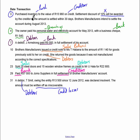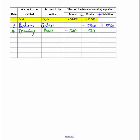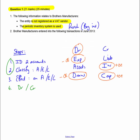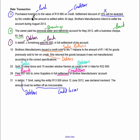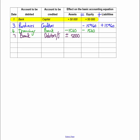Transaction on the 7th: debtor Jay Armstrong paid R5,000 in full settlement of his account. The two accounts are debtors and bank — both asset accounts. Assets go up because we've got more money, and go down because we've got fewer debtors. DEAD says assets increase on the debit side, so debit the asset that is increasing — bank. Credit the asset that is decreasing — debtors. You could put the debtor's name, Jay Armstrong, instead of 'debtors.'